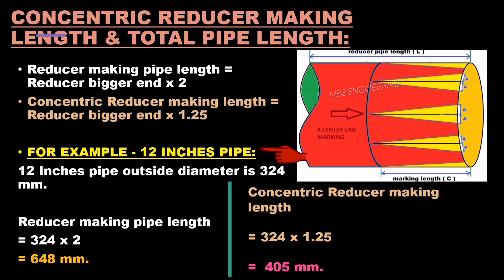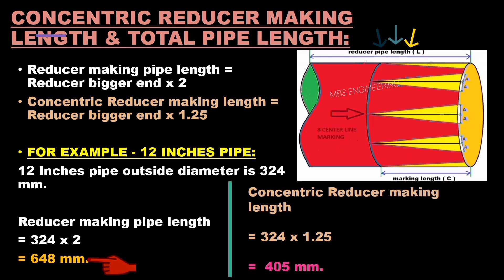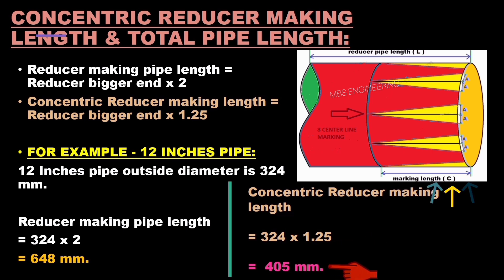We will look at a sample example for calculating the reducer making pipe length and reducer making length for a 12-inch pipe. A 12-inch pipe has an outside diameter of 324 mm. Applying the formula, the concentric reducer making pipe length is 324 × 2 = 648 mm. The concentric reducer making length is 324 × 1.25 = 405 mm.